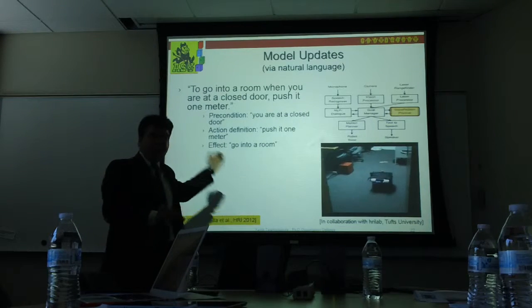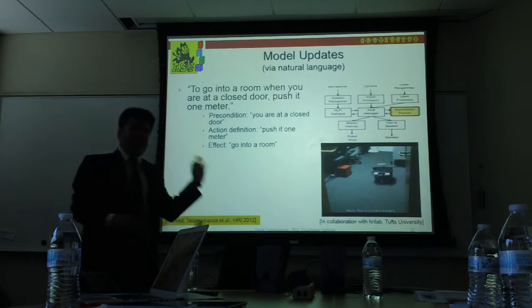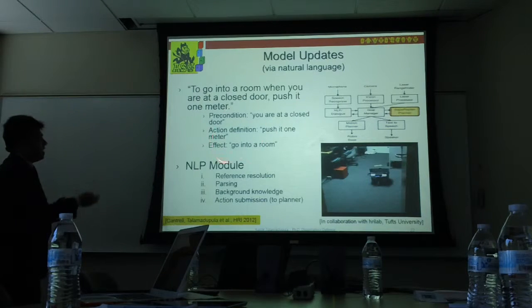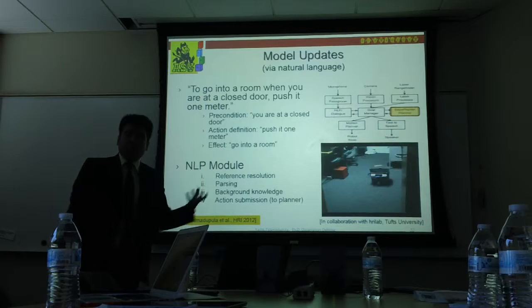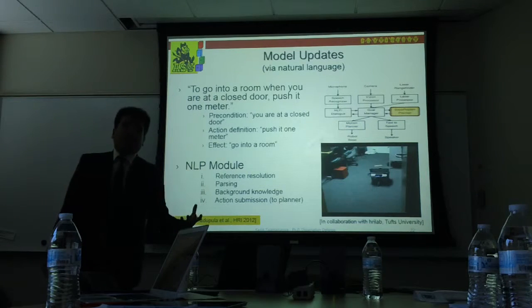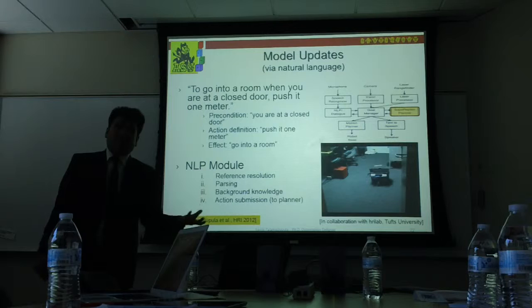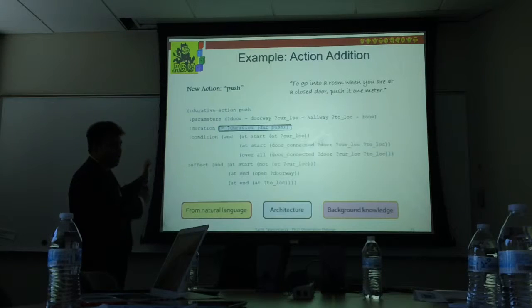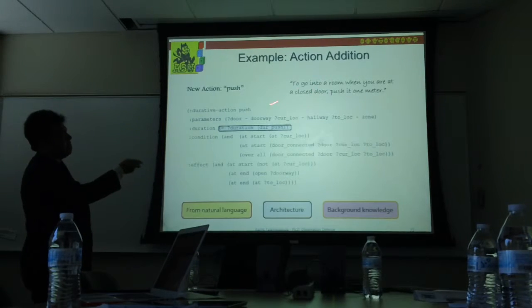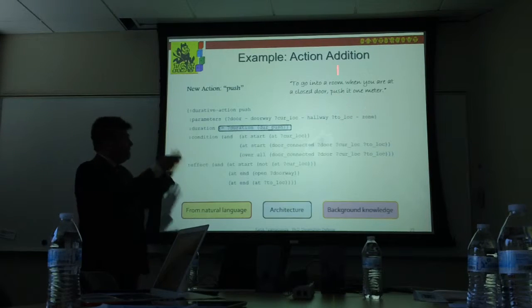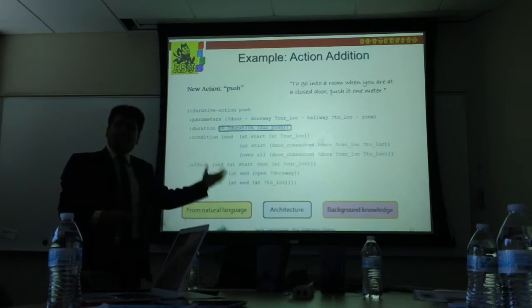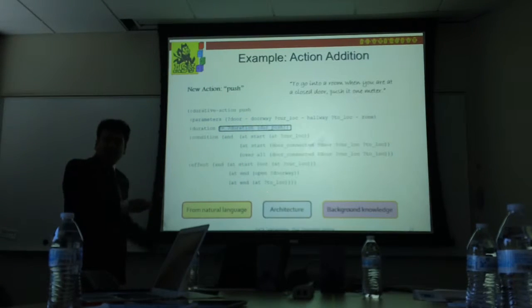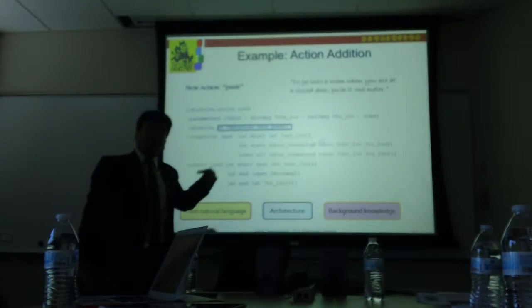Earlier the robot could go into an open room, but if the door was closed it couldn't enter. Now the human is giving it new information: if a door looks closed, you can try pushing it and go inside that way. This is a model update, and here is what it looks like in PDDL — the representation the planner understands and can make plans with.